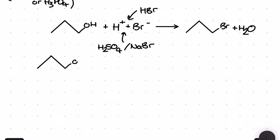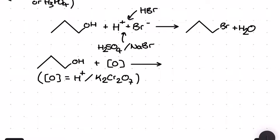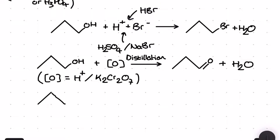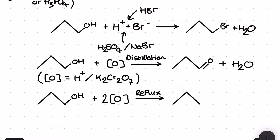For the third reaction of our alcohols we're moving into the realm of oxidation, using acidified potassium dichromate(VI) as the oxidizing agent. Taking a primary alcohol and heating it under distillation with the oxidizing agent produces an aldehyde and some water — this is the only way to make an aldehyde in the A-level. Taking the same alcohol but heating it under reflux instead takes our primary alcohol to a carboxylic acid.